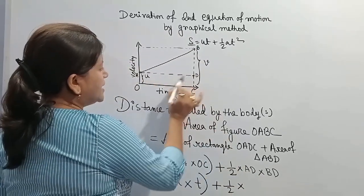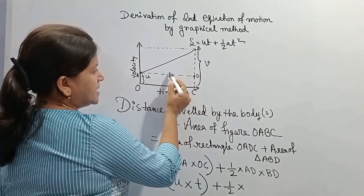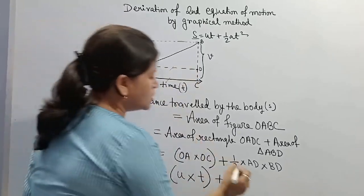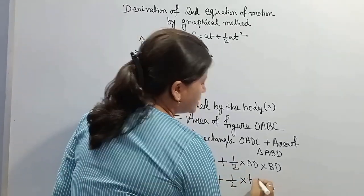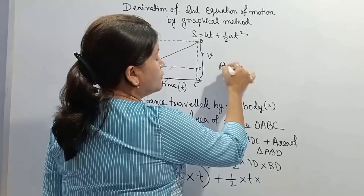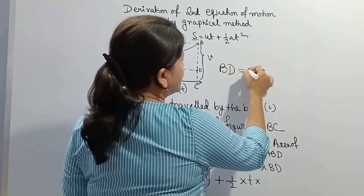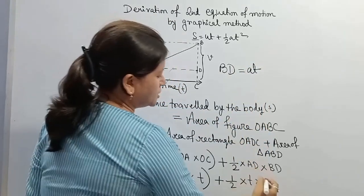Here AD equals OC, so OC equals t, that means AD also equals t. Now BD, from the first equation of motion we get BD equals at. Now put this value here.